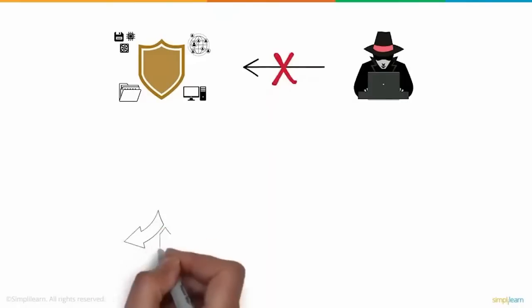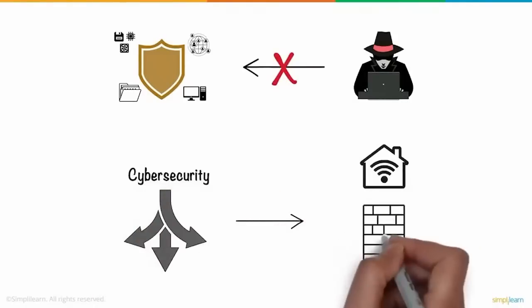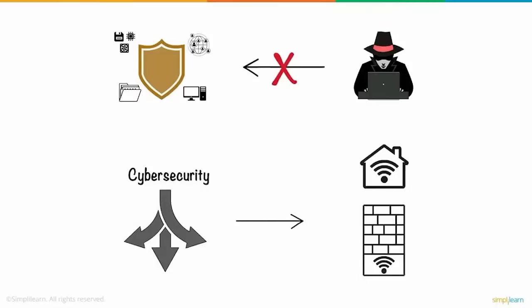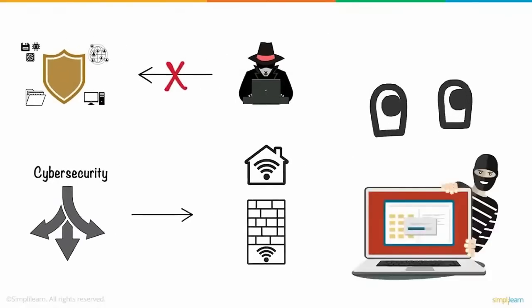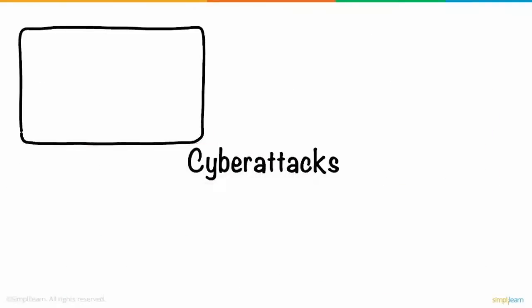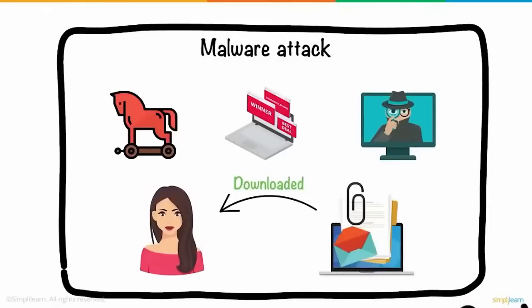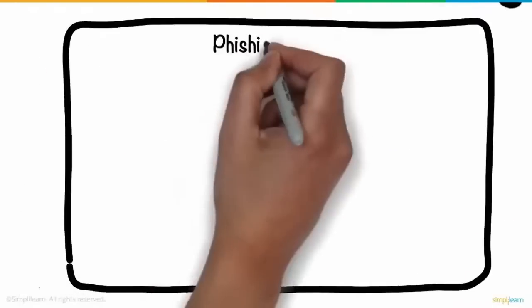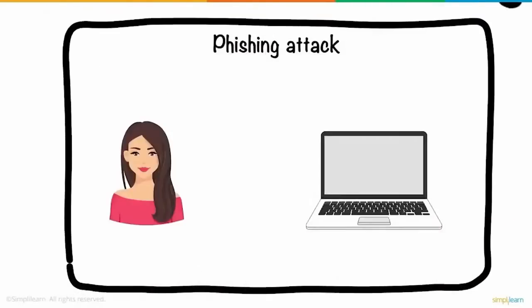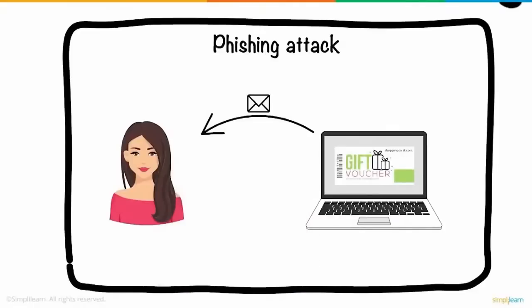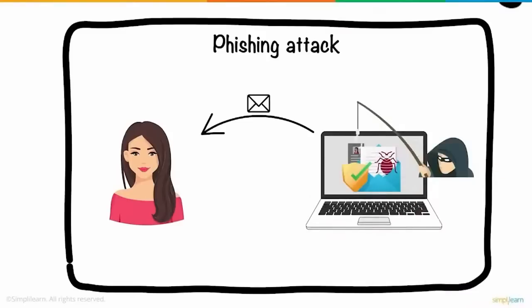Cybersecurity involves techniques that help secure various digital components — networks, data, and computer systems — from unauthorized digital access. There are multiple ways to implement it depending on your network type and the attacks you are prone to. One of the most common types is a malware attack like Trojan, Adware, and Spyware. Had Anne downloaded suspicious attachments, her system could have been corrupted. Next is a phishing attack — the type Anne experienced — where hackers send fraudulent emails appearing to come from a legitimate source to steal sensitive data like credit card details.